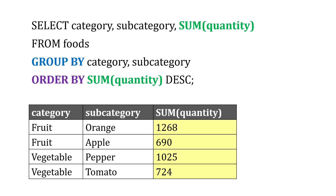We can also add to this further — we can include an ORDER BY to order it by the SUM of the quantity descending. So within each of those subcategories, we're getting orders from highest to lowest in descending order.